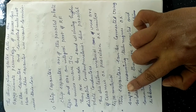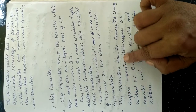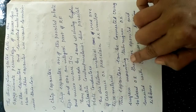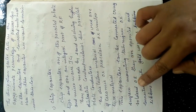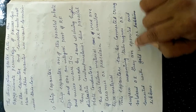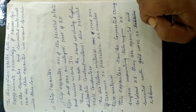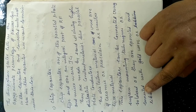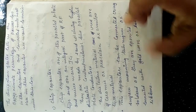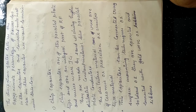Chip capacitors can be connected using the surface mount technique, or they can be soldered or epoxied and connected with gold wires or ribbons. We always use this capacitor by connecting it via surface mounting techniques.